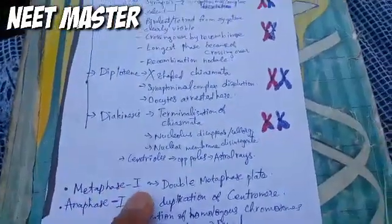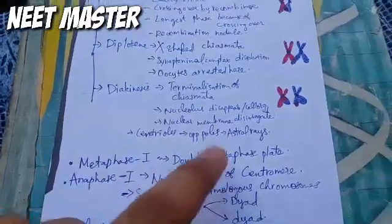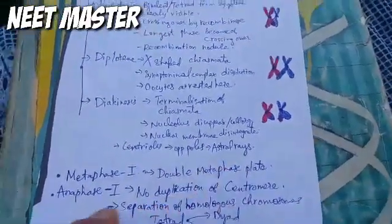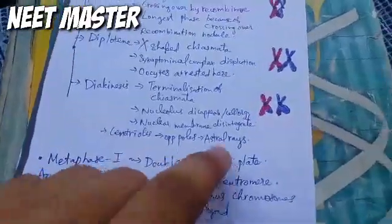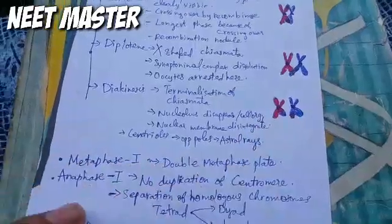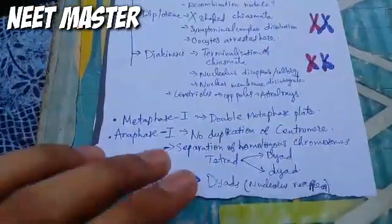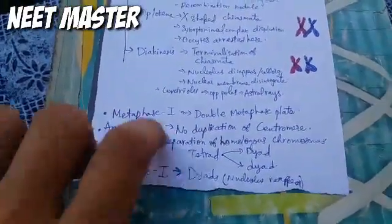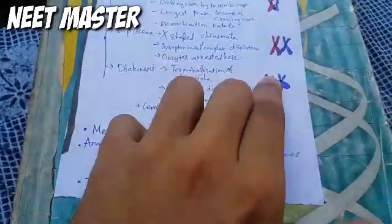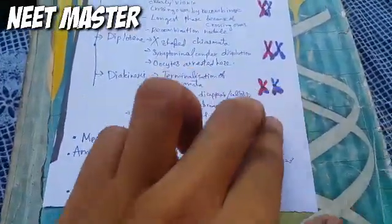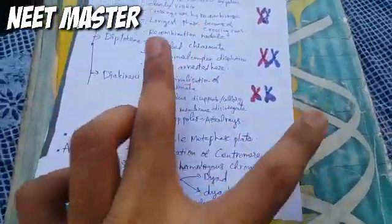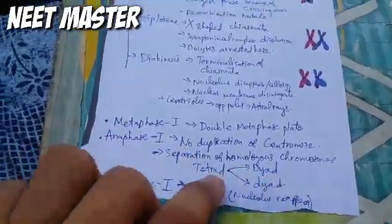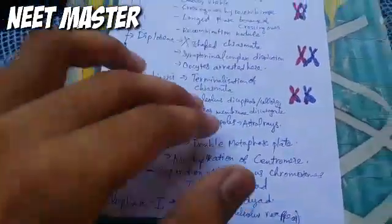Metaphase 1: homologous chromosomes align. There is no duplication — the centromere has not been duplicated. Then in Anaphase 1, there is separation of homologous chromosomes. This is the tetrad stage, now becoming dyads.